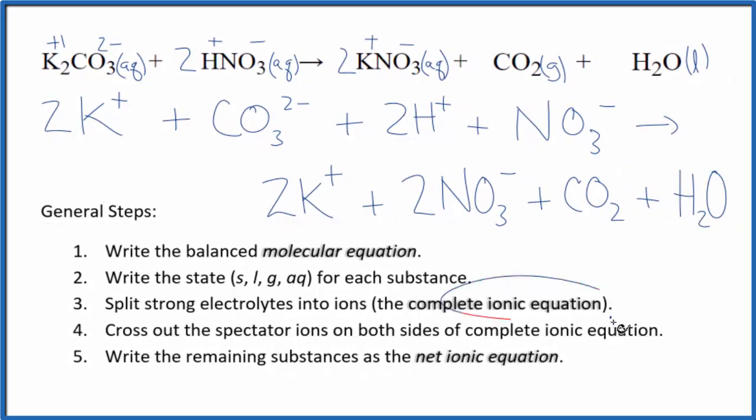Now we can cross out these spectator ions, they're on both sides of the complete ionic equation. So here's our reactants and products. I see we have two potassium ions in the reactants and two in the products, get rid of those.